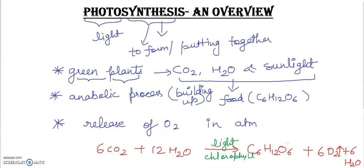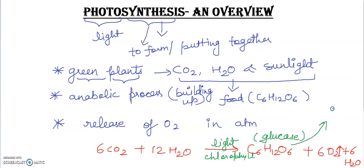Glucose is the food which is formed by green plants. This sugar is formed only in plants, and this glucose is then stored in the plant in the form of starch. As glucose is produced it is converted into starch as fast as it is made.